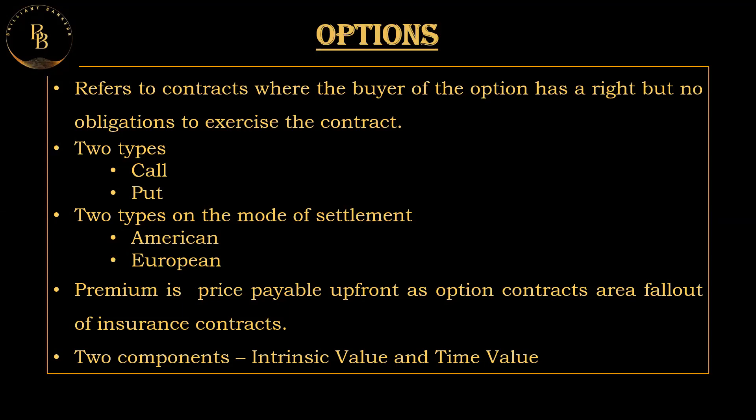An example for a call option: you buy a call option for 100 shares of a company at a strike price of rupees 1,000 per share. If the stock price rises to rupees 1,200, you can use this call option to buy the shares at the agreed-upon rupees 1,000, making a profit. For example, if a share is at 100 now and you take a call option of 120 for this month's expiry, and it goes to 120, you have the option to buy it at rupees 100.